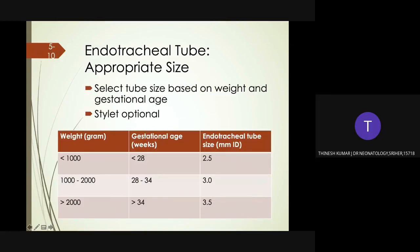How to choose tube size based on weight and gestational age: less than 1000 grams or less than 28 weeks gestation — use 2.5 mm ET tube. Between 1000 and 2000 grams or 28 to 34 weeks gestation — use 3.0 mm ET tube. More than 2000 grams or more than 34 weeks gestation — use 3.5 mm internal diameter ET tube. We do not use 4 mm internal diameter ET tubes.